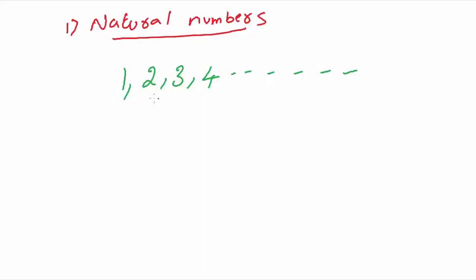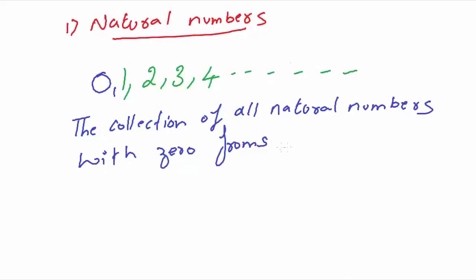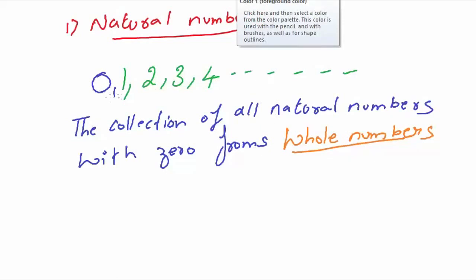Now, we are going to learn what whole numbers are. Whole numbers are nothing but numbers that start from 0 and then continue with 1, 2, 3, 4. The definition of whole numbers: whole numbers means the collection of all natural numbers with 0. So, whole numbers are 0, 1, 2, 3, 4 and so on.